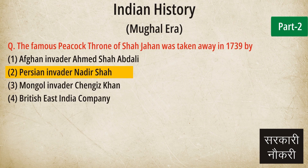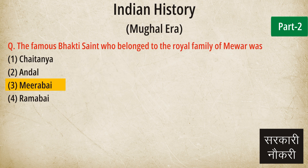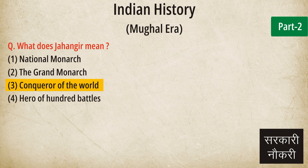Question: The famous peacock throne of Shah Jahan was taken away in 1739 by. Answer: Persian invader Nadir Shah. Question: The famous Bhakti saint who belonged to the royal family of Mewar was. Answer: Mirabai. Question: What does Jahangir mean? Answer: Conqueror of the world.